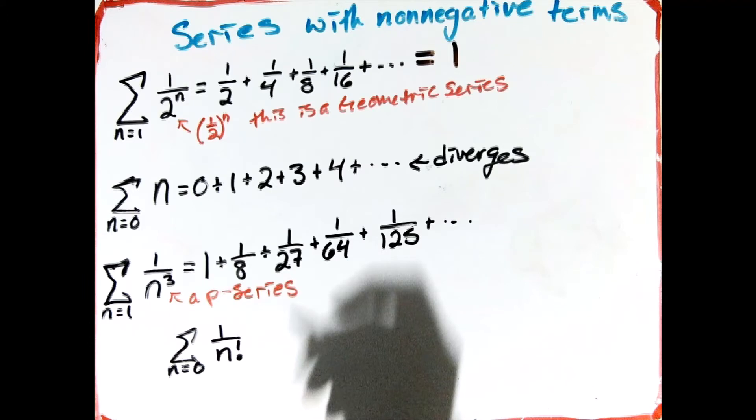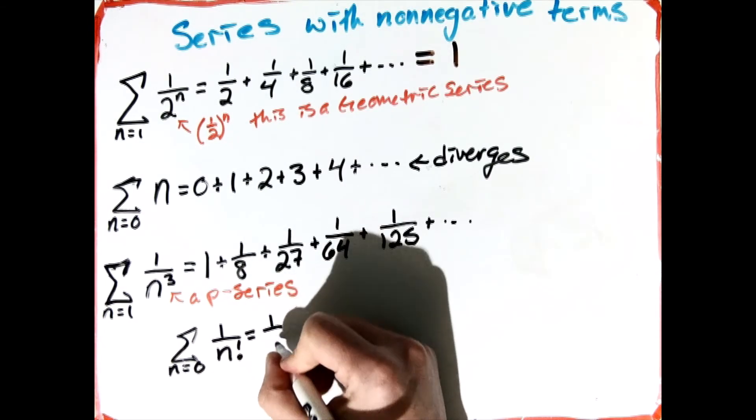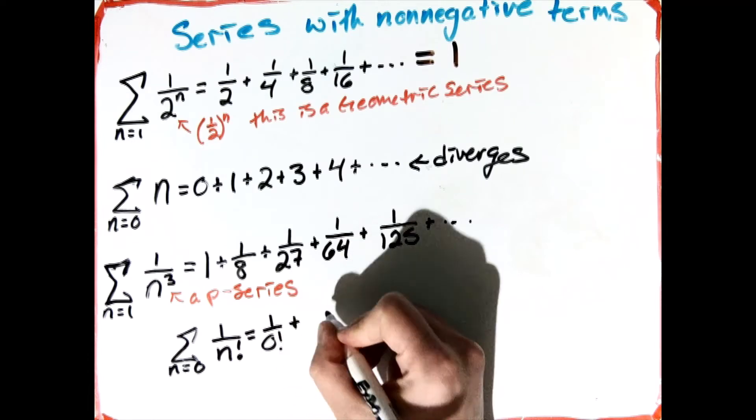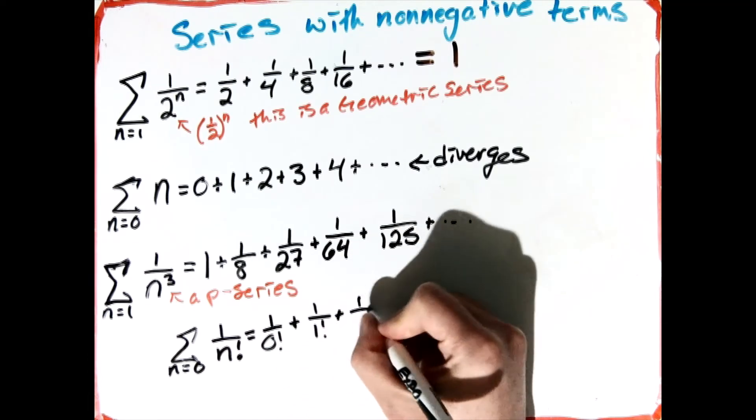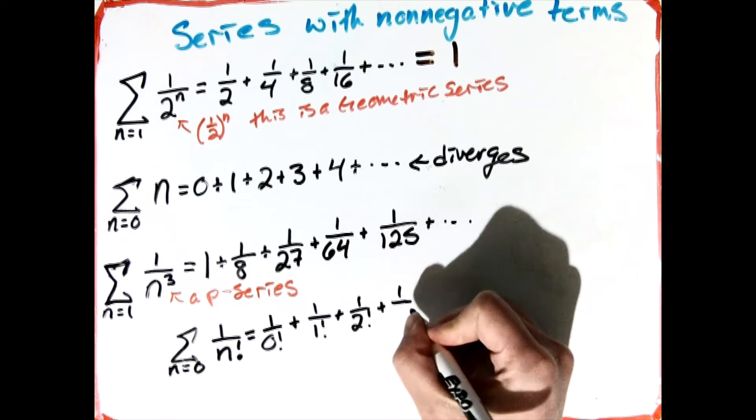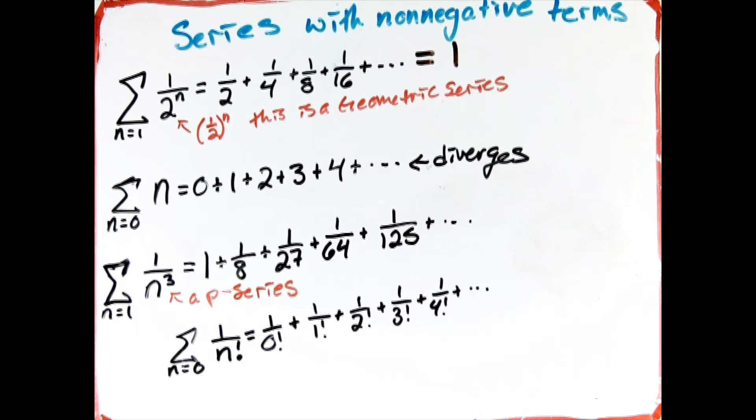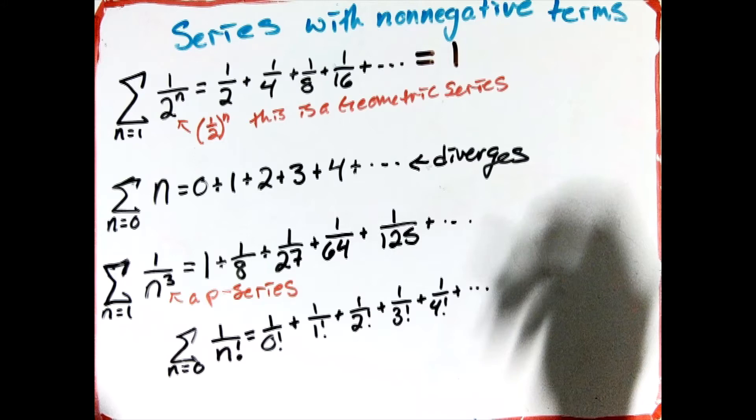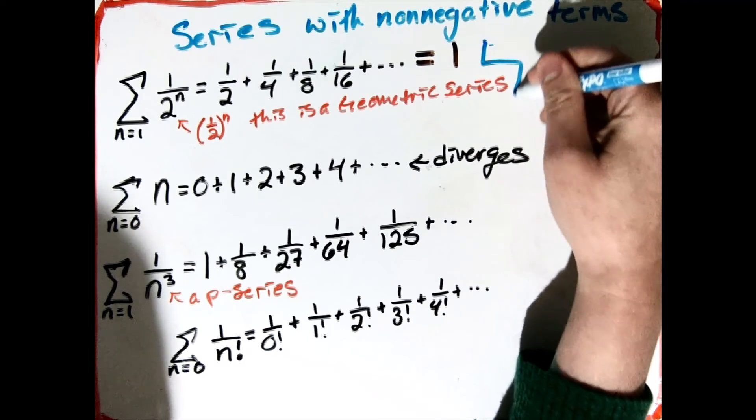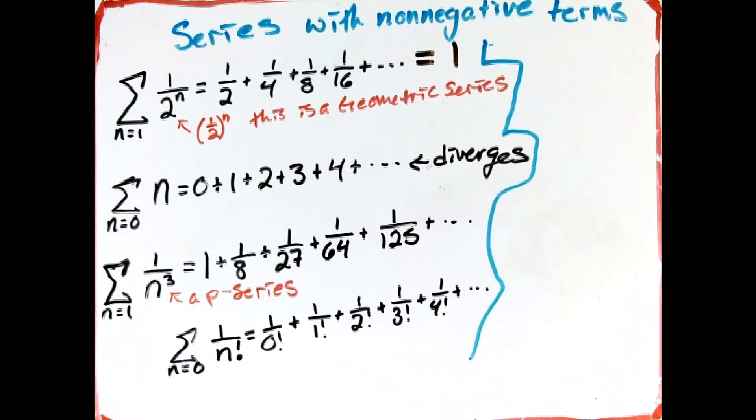And then finally we're going to introduce this idea of factorial, and factorial is one of my favorite things. So I'm going to write it like this first, so my terms look like 1 over 0 factorial plus 1 over 1 factorial plus 1 over 2 factorial plus 1 over 3 factorial plus 1 over 4 factorial, and we'll keep on going. What is a factorial? So let's just take an aside really quick, talk about what a factorial is.